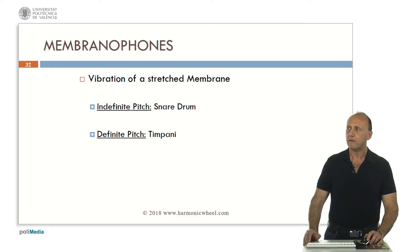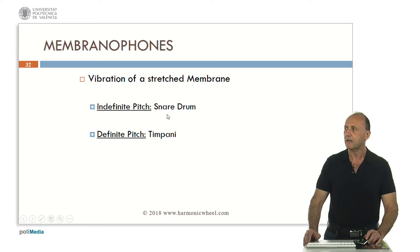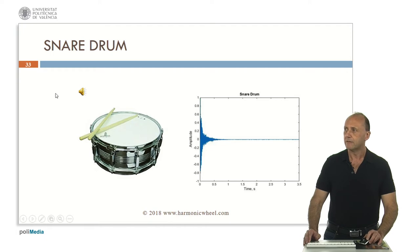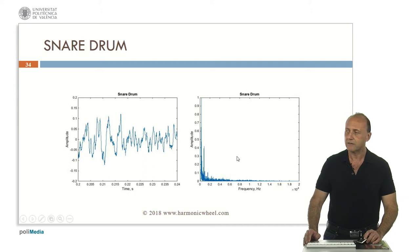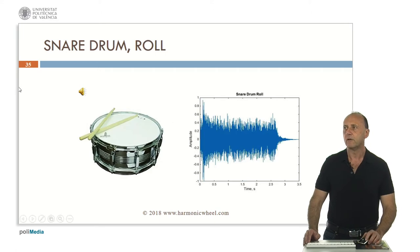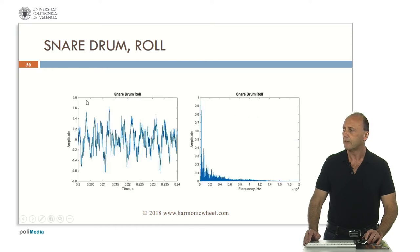Now let's analyze the timbres of membranophones. In this case, the sound is generated by the vibration of a stretched membrane. They can have an indefinite pitch, as the snare drum, or a definite pitch, as the timpani. This is the snare drum. It is a very short sound. In this case, the spectrum is not a harmonic series, because this is noise. This is a roll with a snare drum. Again, the spectrum is not a harmonic series, because they have an indefinite pitch — it is noise.